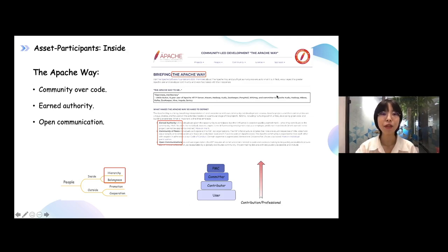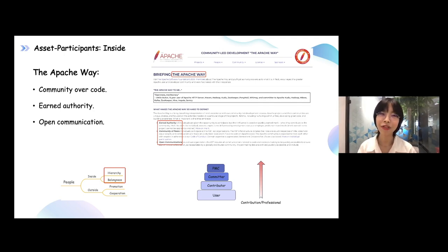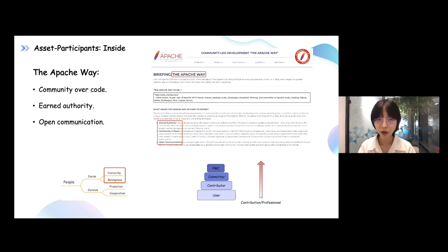The last part is about the people. From Apache Community Governance Principles, they believe community is over code — people are more important than the code or the repository. Because if we just have the code base, that means you are only one person maintaining the repo, with no users, no attention, and no contributors. That means it cannot have a long-term healthy running mode.